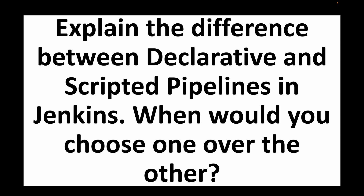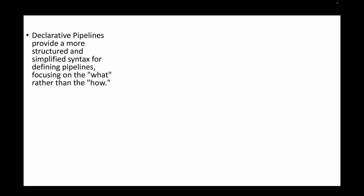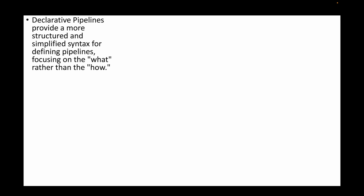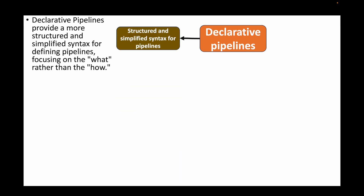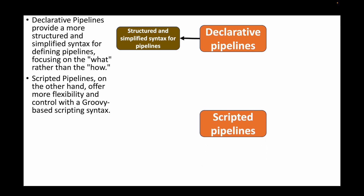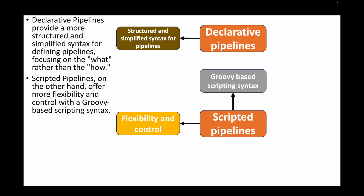The next question is: explain the difference between declarative and scripted pipelines in Jenkins, and when would you choose one over the other? Jenkins pipelines come in two types. Declarative pipelines provide a more structured and simplified syntax, focusing on what to do rather than how to do it.